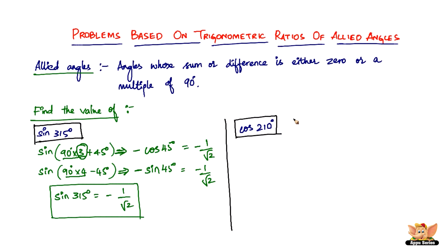Let's quickly solve another problem: find the value of cos 210 degrees. From now on I'm going to follow just one method — you can experiment with the other as practice. I'm going to write cos 210 degrees as cos of (90 × 2 + 30), which is 180 + 30 degrees. You could also write it as 270 − 60, which also gives 210.